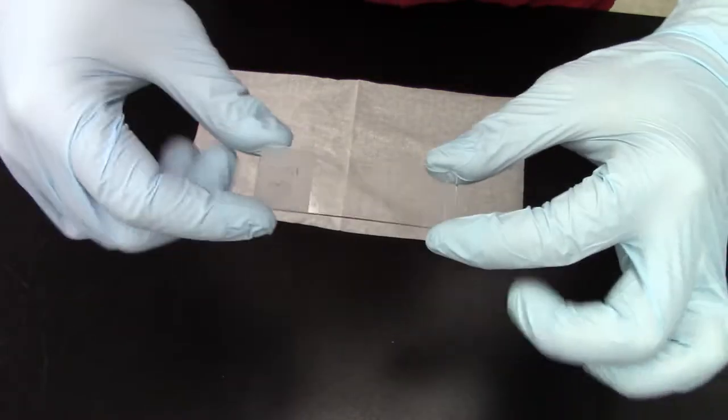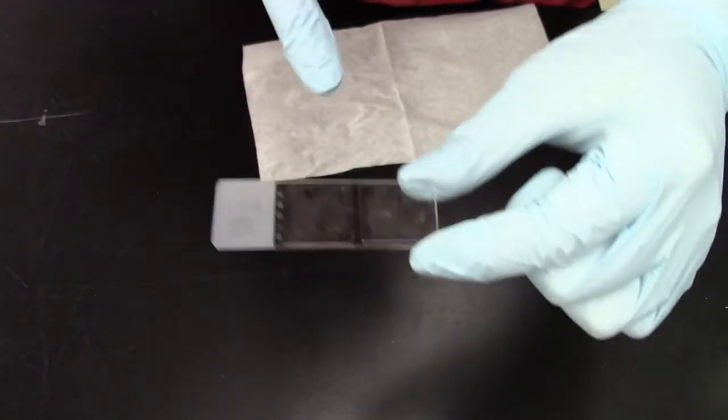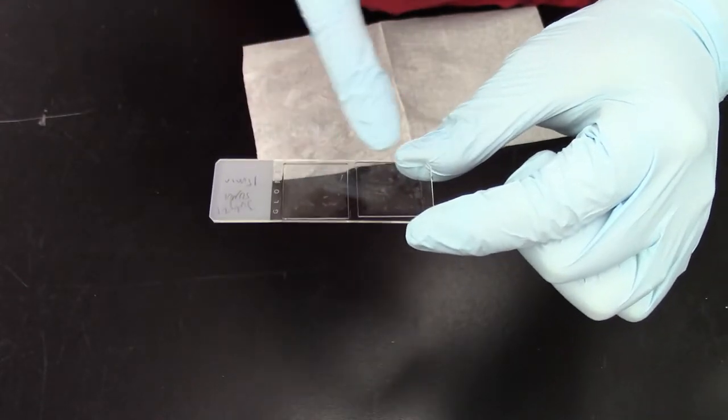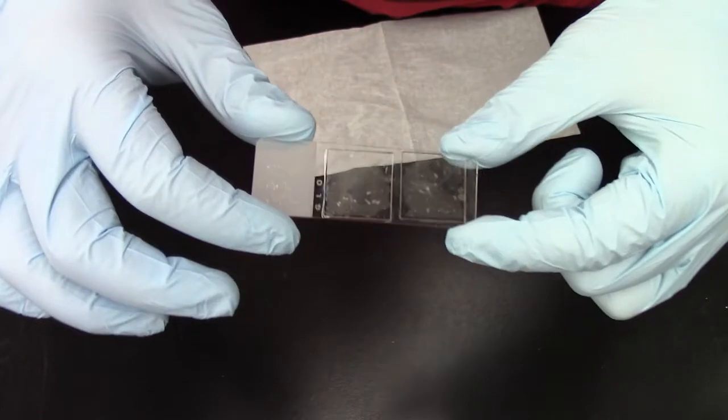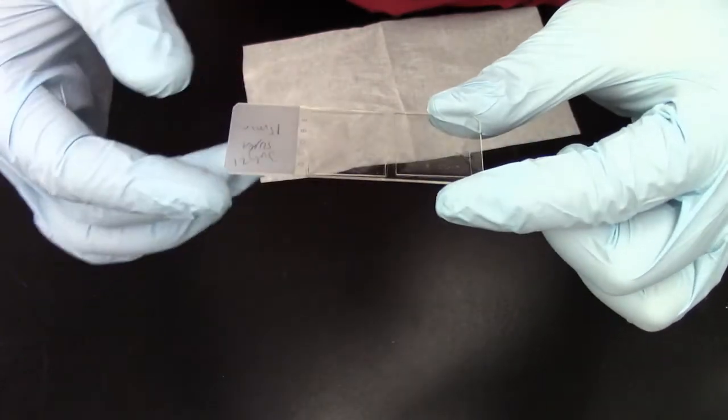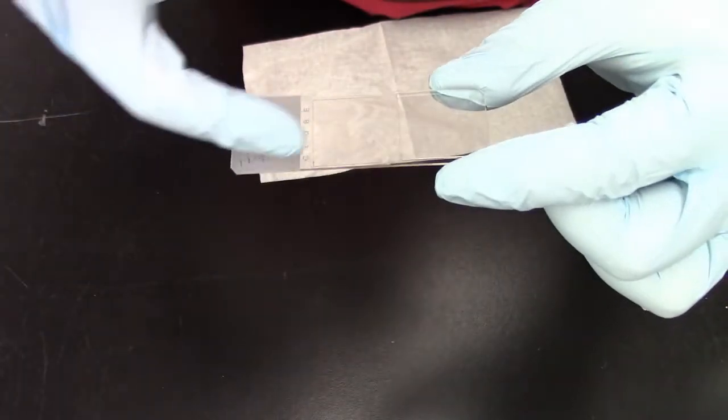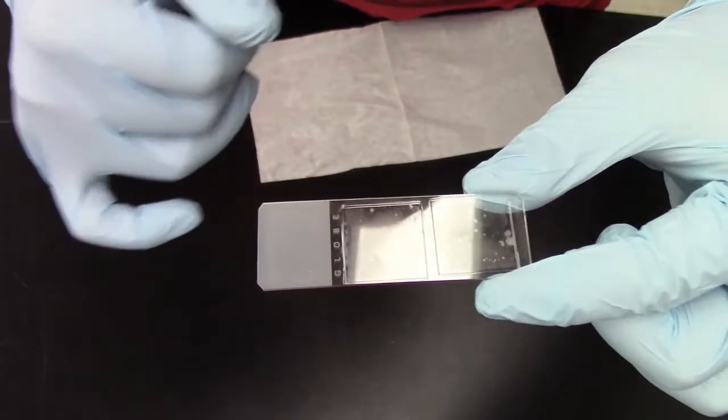So here we have our slide and as you can see on my slide I have two coverslips. Each one of these coverslips has some cells on it that have been stained in our last lab. Obviously if you look at the slide it has a name so this name indicates what exactly I have on my slide.